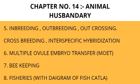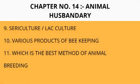Then what is beekeeping, and beekeeping topics. Then fisheries — with a diagram of fish Catla. You should keep the diagram of Catla fish in your mind. Then what is sericulture and mulberry culture, and various products of beekeeping.